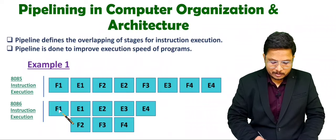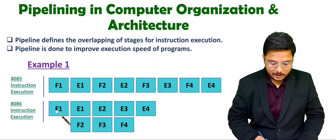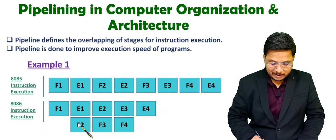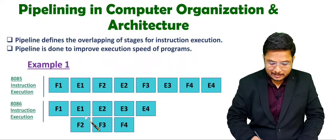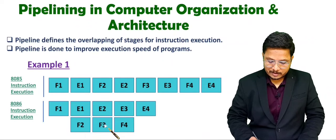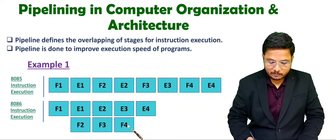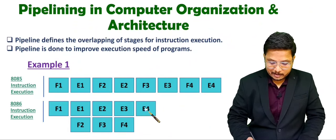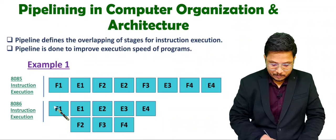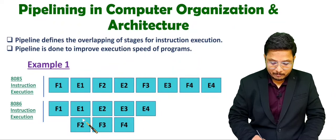In the 8086, execution is happening in parallel. First it fetches the first instruction, and in the second cycle when it is executing the first instruction, in parallel it is fetching the second instruction. In the next cycle it executes the second instruction while in parallel fetching the third instruction. Then in the next cycle it executes the third instruction while fetching the fourth instruction, and in the next cycle it executes the fourth instruction.